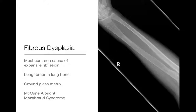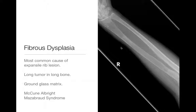F is fibrous dysplasia. Think of it as a long tumor in a long bone. It's classically described as having a ground glass matrix — this smudged-out fibrous tissue that looks kind of smudgy like ground glass on the radiograph. Fibrous dysplasia is pretty common. Usually it's a solitary lesion, a long tumor in a long bone. You can see this one extends all the way throughout the radius, with a pathological fracture because the bone is being thinned out.